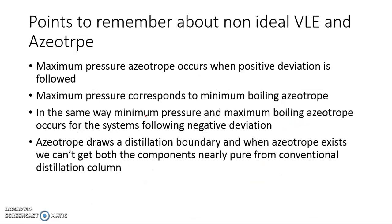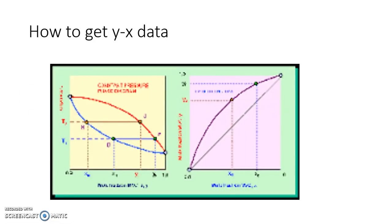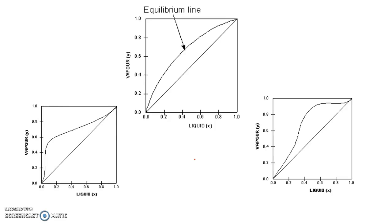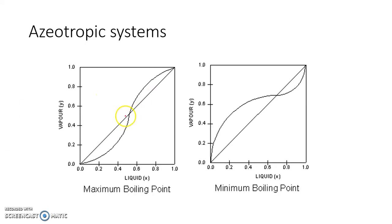This gets reflected in the YX diagram. A YX diagram is basically plotting Y and X data on the same curve — this is the diagonal line and this is the equilibrium line. This gives freedom to construct the number of stages in a distillation column. For an ideal system, this is one curve; for a slightly non-ideal positive deviation, it's another; and when there is an azeotropic system, there is a point where Y and X are the same, which creates a boundary.